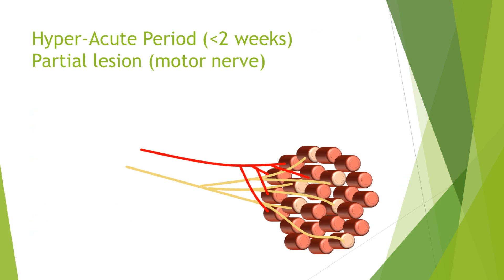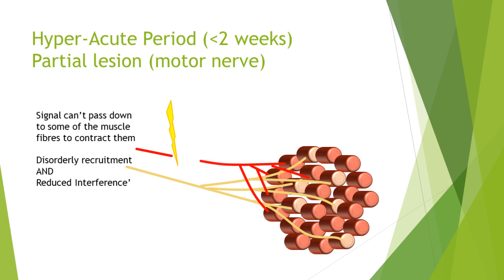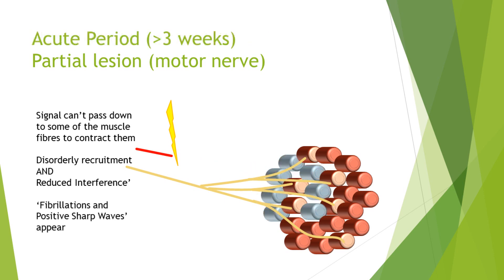Let's take a partial lesion of a motor nerve in the hyperacute period. Here we have a schematic of some muscle fibers, and the axon in red is the one that's going to undergo the lesion. As it degenerates, the nerve regresses backwards in Wallerian degeneration. Whilst this is occurring, signal cannot pass down that damaged axon to the muscle fibers that would have been innervated by it. The remaining axonal fibers will start to recruit muscle fibers downstream in a disorderly way, because it's not the normal way in which the brain has been programmed to recruit the muscle fibers. One will see a disorderly recruitment and a reduced interference pattern, as those muscle fibers which would have been innervated by the damaged axon are now no longer recruitable. After three weeks or so, one starts to see the fibrillations and positive sharp waves as the acetylcholine receptors are upregulated and the muscles become hyperexcitable.